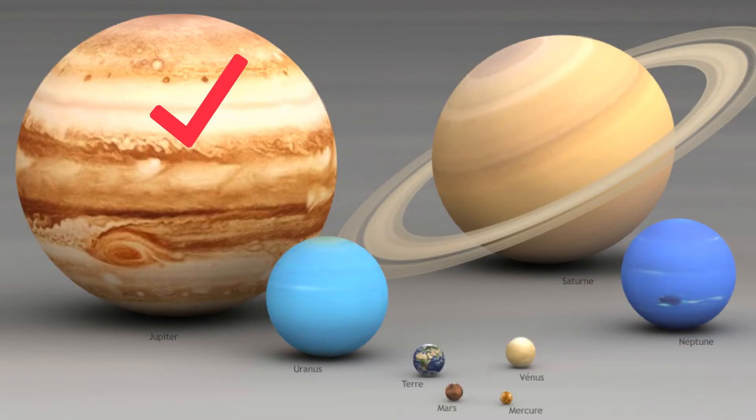Jupiter is the largest of all the planets and makes our planet Earth look very small. Even Neptune, which is the smallest of the gas giants, is much larger than the Earth. Take a look at the Earth compared to the gas giants.